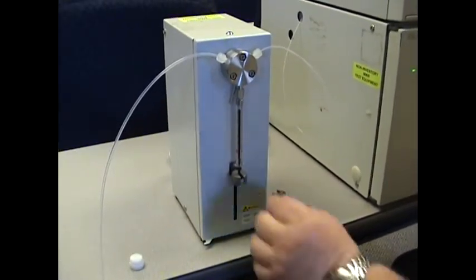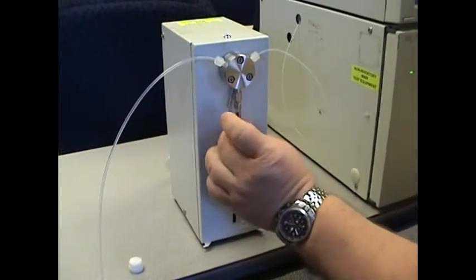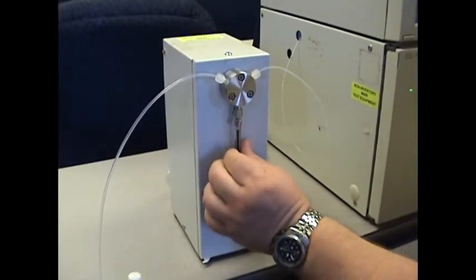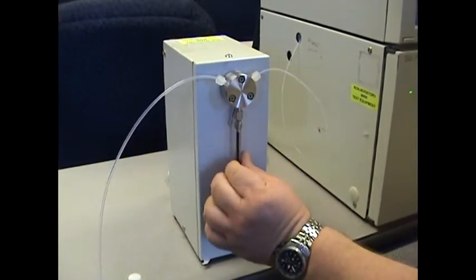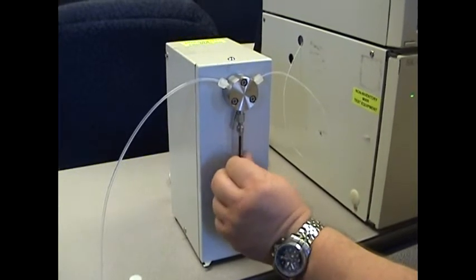You can then unscrew the body of the syringe itself. It's easier if you grip it from the metal at the top of the syringe to initially get it started. Then it should unscrew freely.